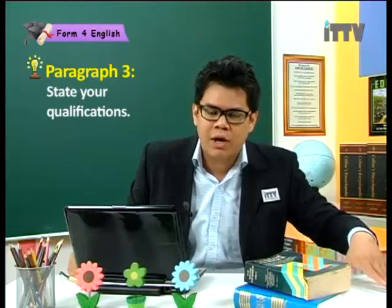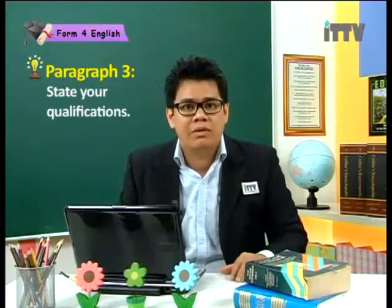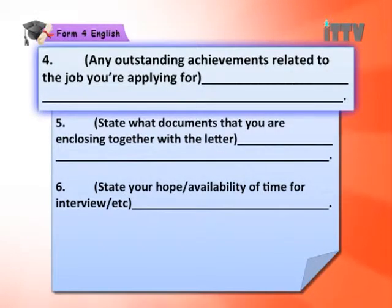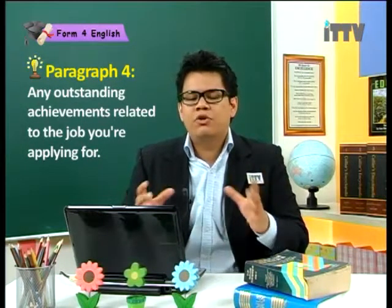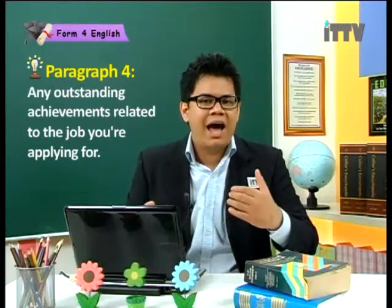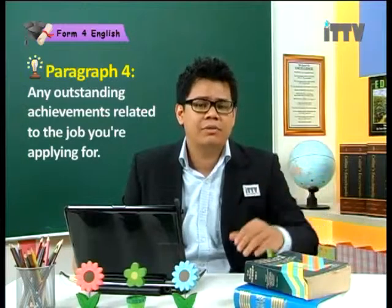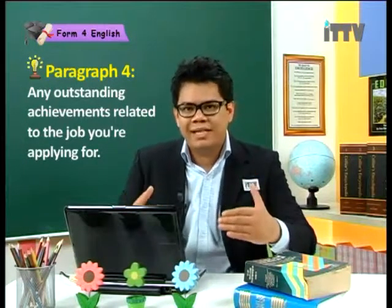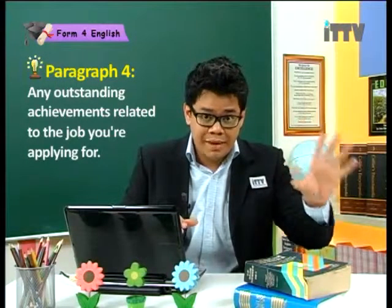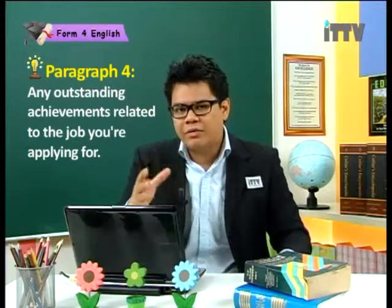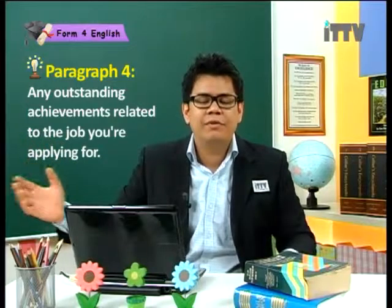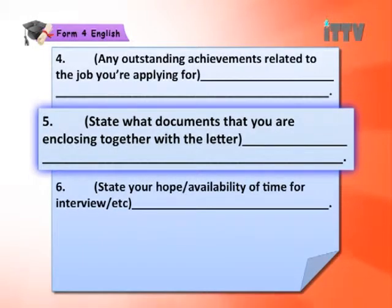When you're looking for a real job, you will of course need to write about yourself. But when writing for an exam, look at the advertisement and those requirements — then turn them around and write them as your qualifications. In the fourth paragraph, state any outstanding achievements related to the job you're applying for. Whenever you apply for a job, it's good to tell them about yourself. For example, 'I was the captain of the basketball team' or 'I was the captain of the swim team.' Not only are you qualified based on your education, you're also an all-rounder.